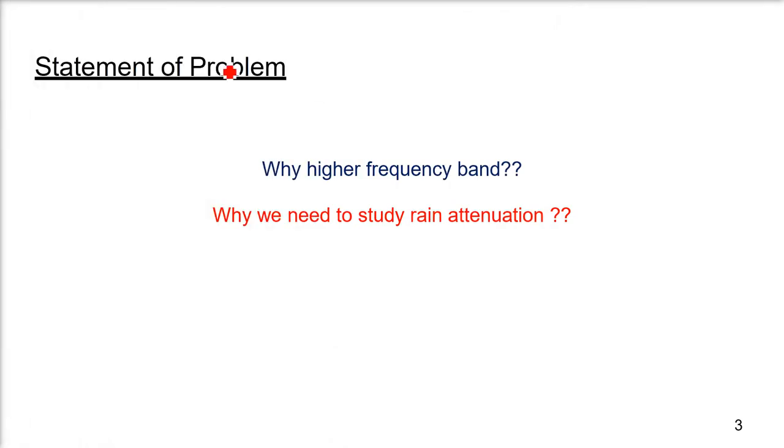Why higher frequency bands? When we are on kilohertz or megahertz, we don't have to worry much about rain attenuation. But whenever we are going beyond 10 gigahertz, because the frequency is so high, there will be rain attenuation.